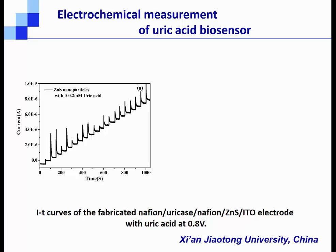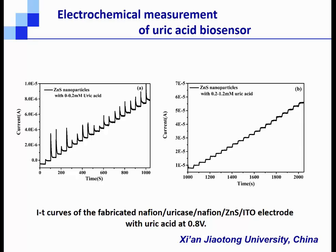We measure the uricase biosensor by the current rise. When we add uric acid concentration from 0 to 0.1, a clear current rise appears. We can see a sharp spike here, and the signal returned to stable within about 10 minutes. The linear range spans from 0 to 1.2 micromolar for the microparticle electrode.